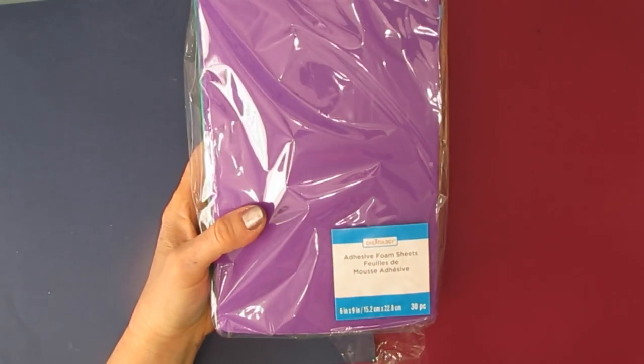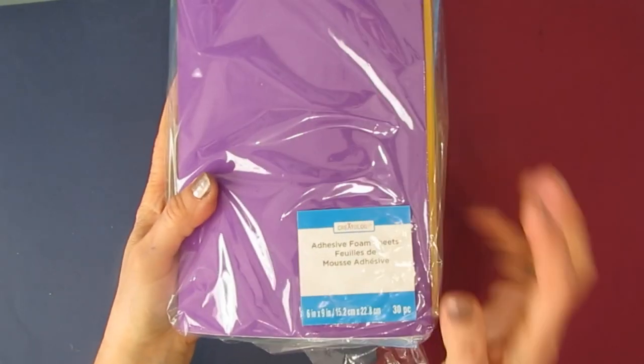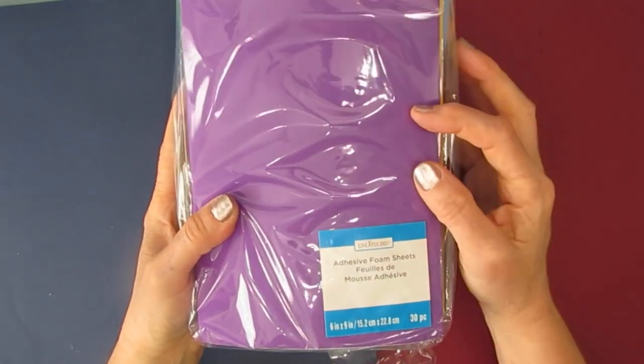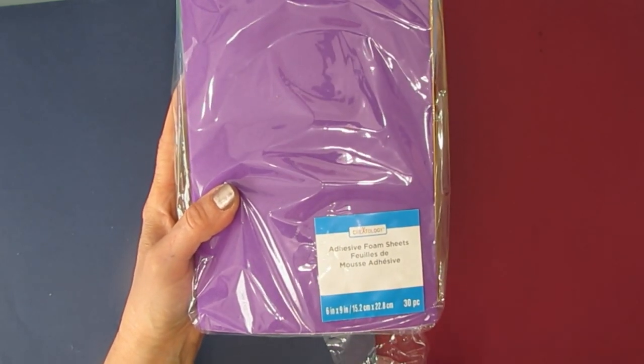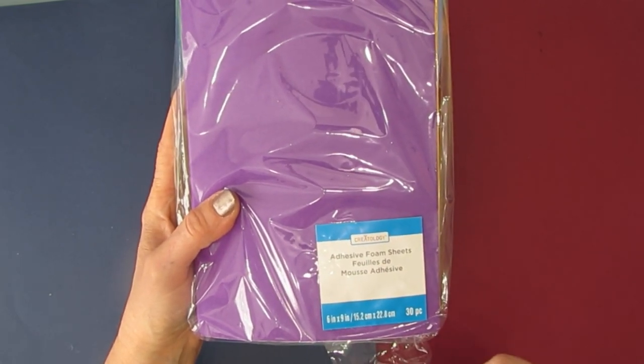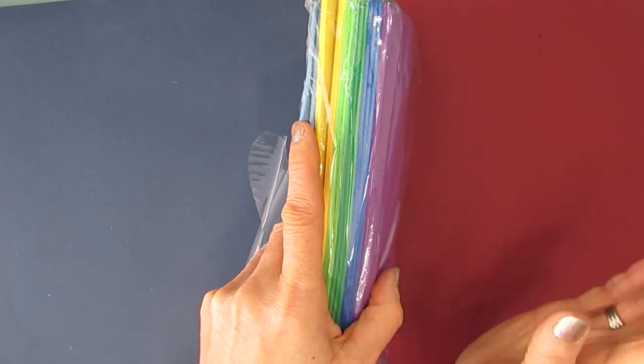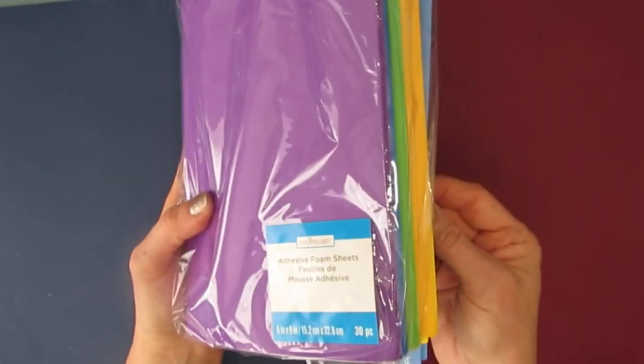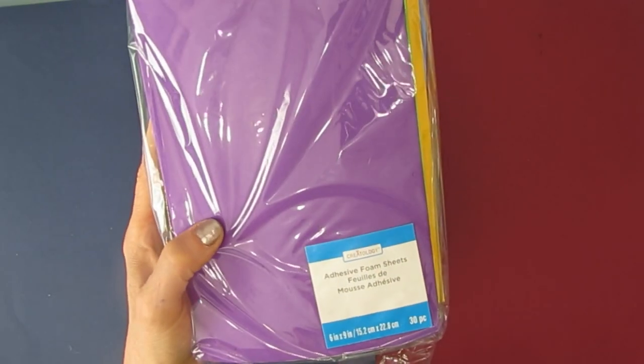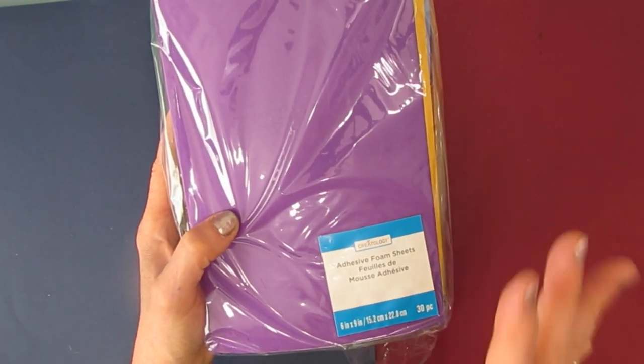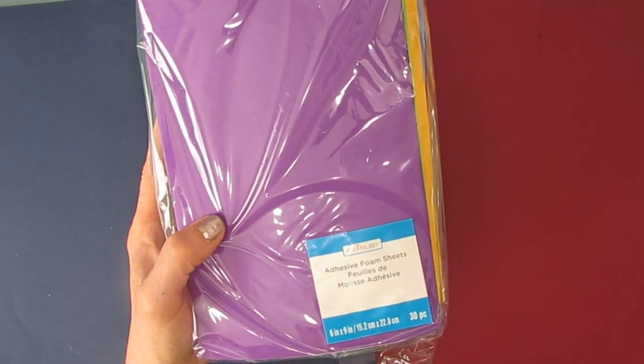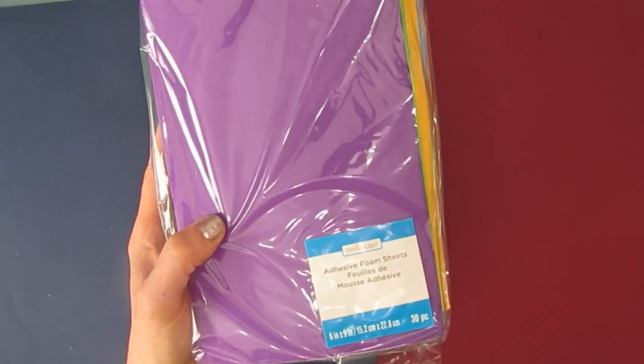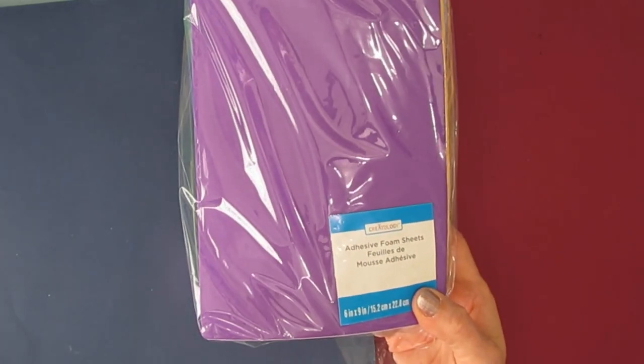What we're going to use to create the stamps is adhesive foam sheets. Now all of the foam sheets are not created equal. The ones that I've been able to source at the Dollar Tree, Dollar Stores are very thin and they don't have the adhesive. These are thicker which is going to benefit you, make better stamps, and the adhesive on these which I got at Michael's, the adhesive works really well. So you're not going to have to start mucking with glue. You can make the stamp, peel it off, adhere it and start stamping right away. So it's worth the extra money. Use a 50% off coupon and go from there.